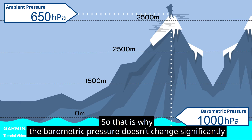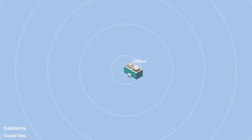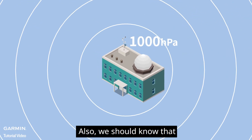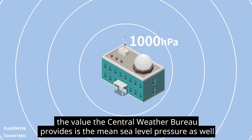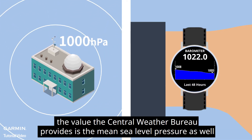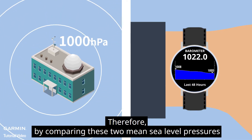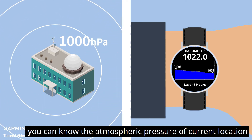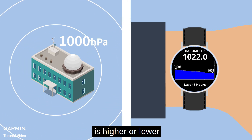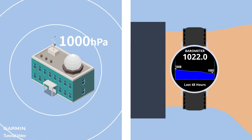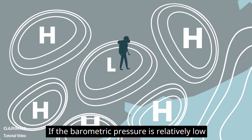That is why the barometric pressure doesn't change significantly. We should also know that the value the central weather bureau provides is the mean sea level pressure as well. Therefore, by comparing these two mean sea level pressures, you can know whether the atmospheric pressure of your current location is higher or lower.